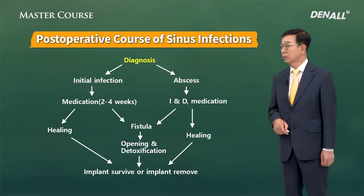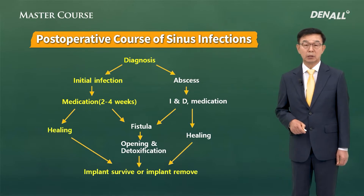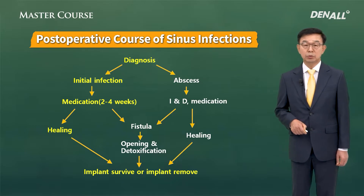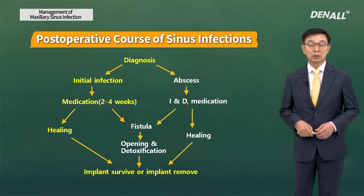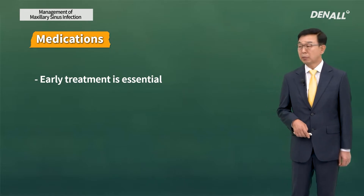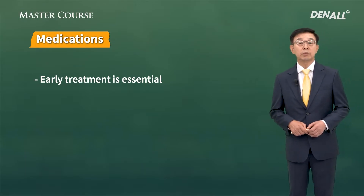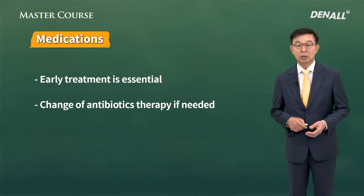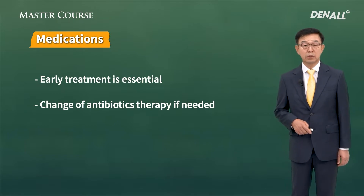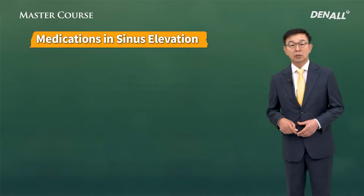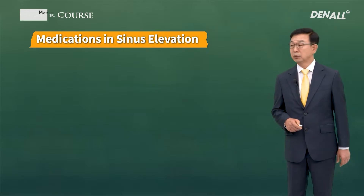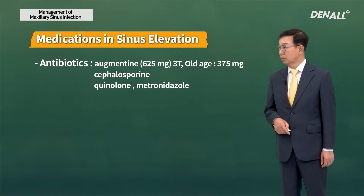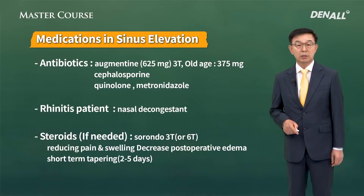I'm going to talk about how to manage post-op infection. Early detection and diagnosis is very important. You need to make diagnosis early and provide medication so that the patient heals — this is the easiest way to treat such conditions. If the patient does not respond well to antibiotics, you can change antibiotics for more effective treatment. Augmentin and Cephalosporin third generation are commonly used. If the patient has GI trouble with these, you can prescribe quinolone. If the patient has severe rhinitis, you can use nasal decongestant or steroid as well.